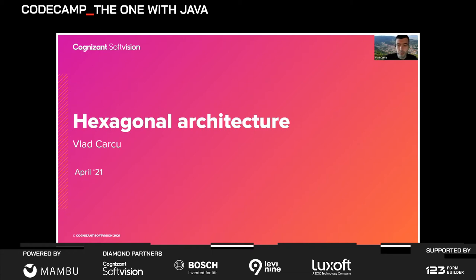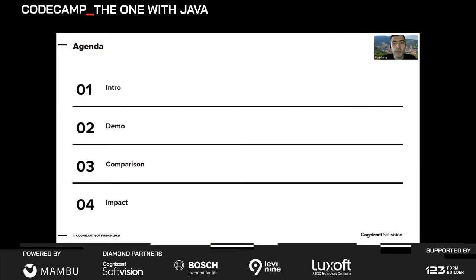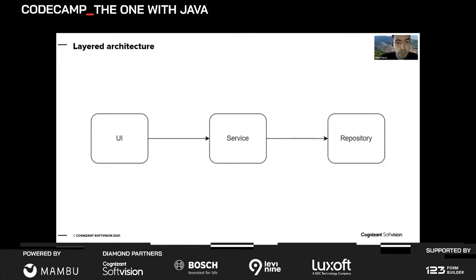First we'll look at how hexagonal and layered architecture are different, and we'll set up some comparison criteria. Then we're going to have a short demo, and after the demo you'll have some semi hands-on experience with hexagonal. We'll compare the two approaches and look at the real-world impact in projects, mostly related to microservices.